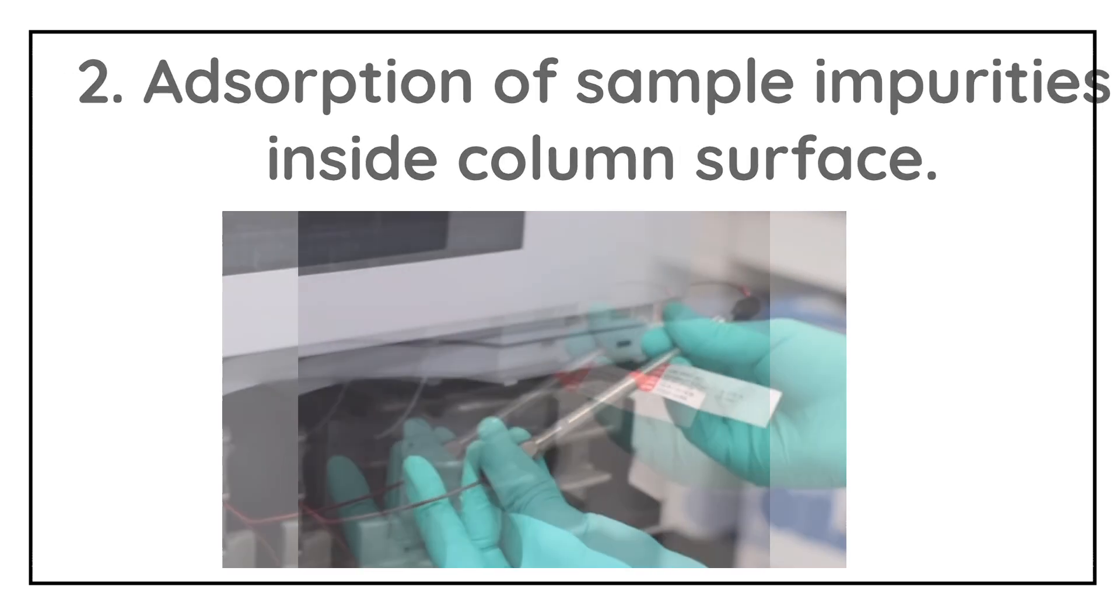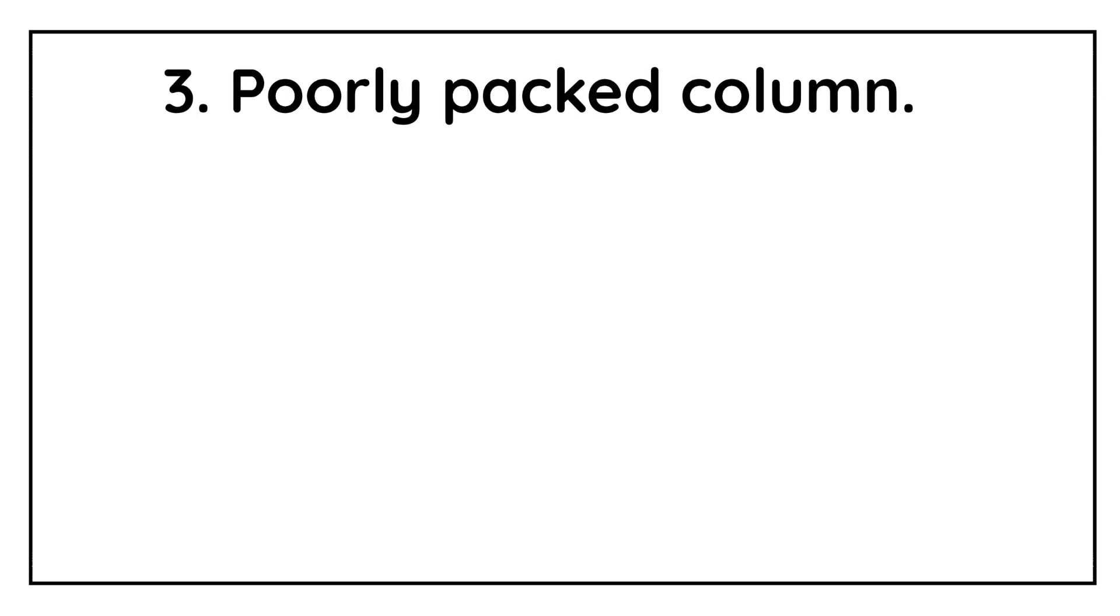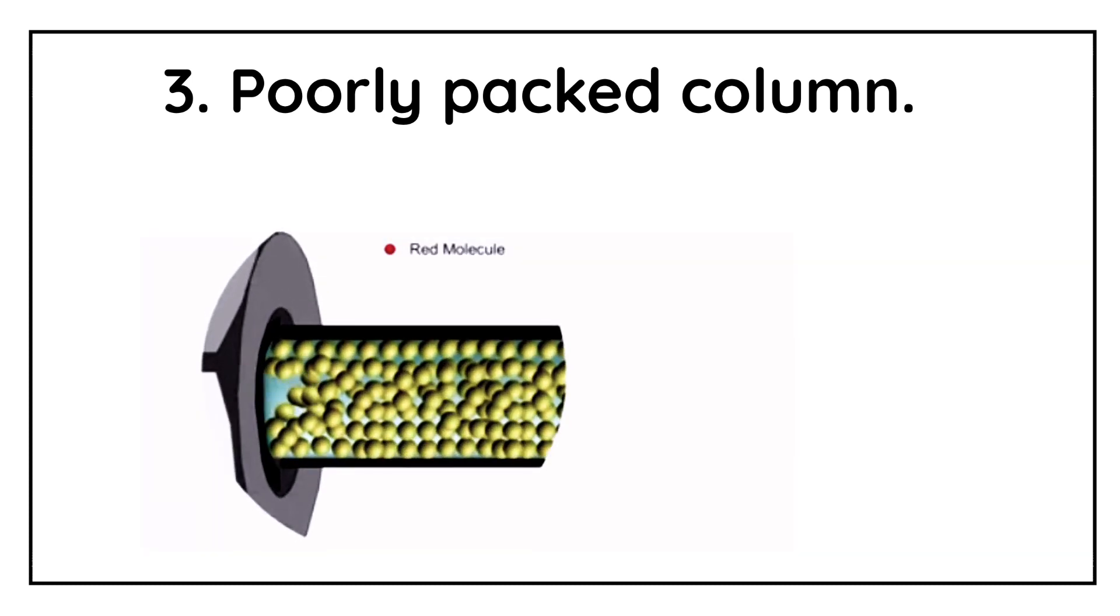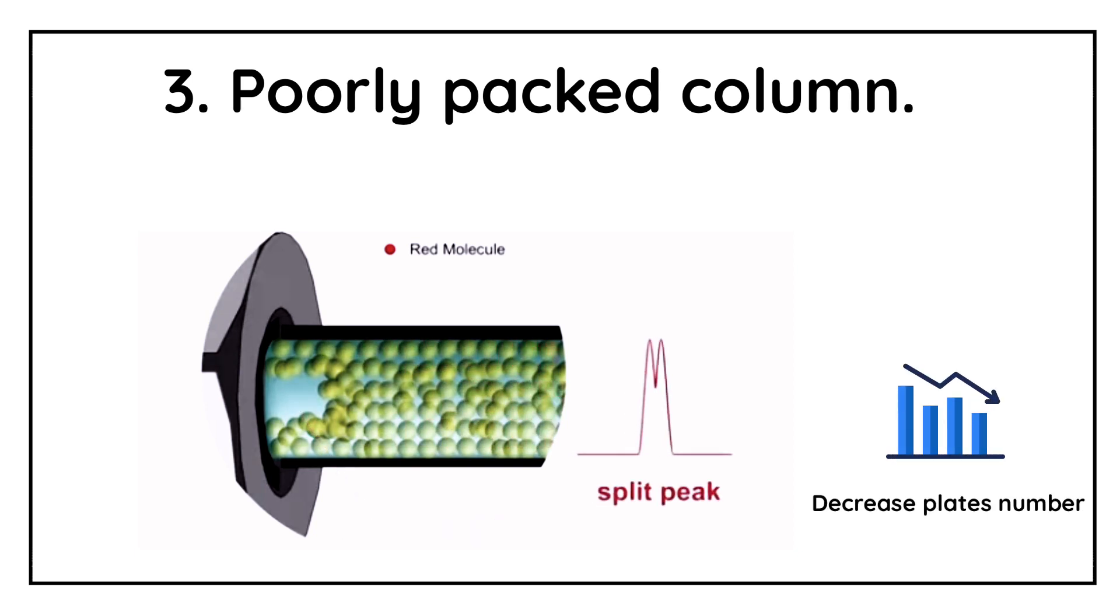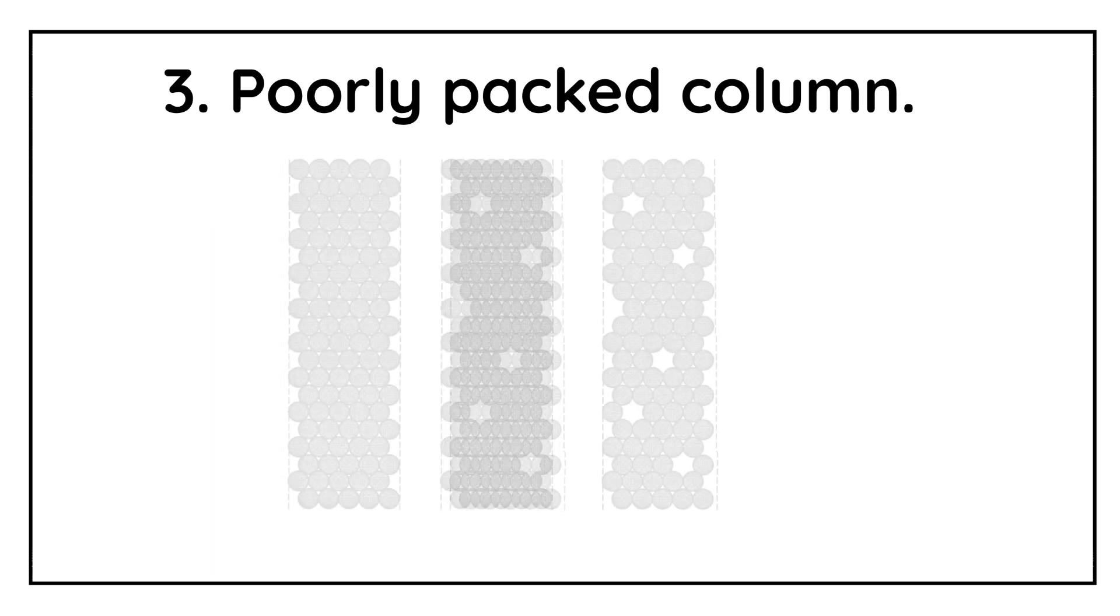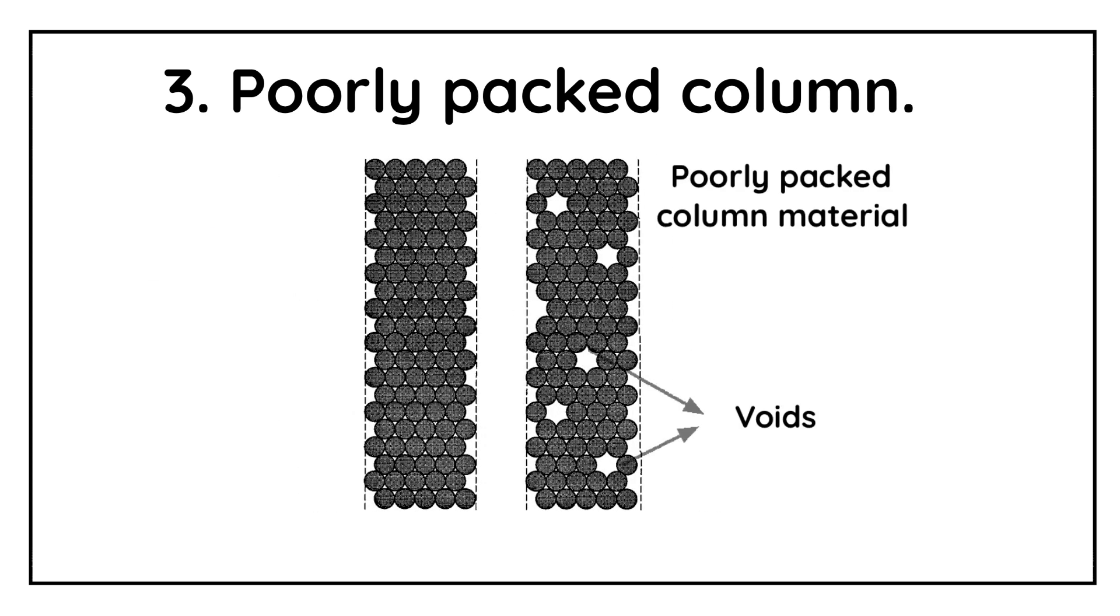Poorly Packed Column. Initial condition of the packed column and the way in which column is used will determine the column lifetime. After short uses, compaction of the packed bed causes the formation of void at the column inlet. And the presence of void at the column inlet will cause sudden decrease in the theoretical plate number. If column material is poorly packed, then voids will be seen more often.